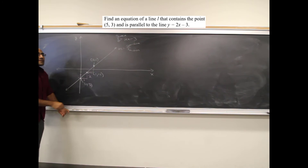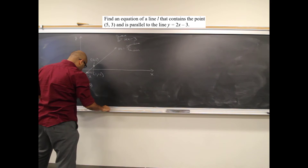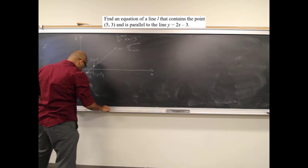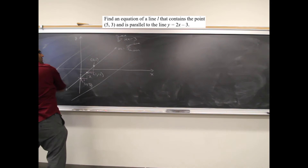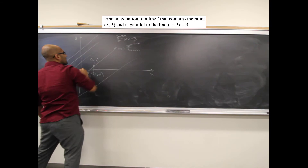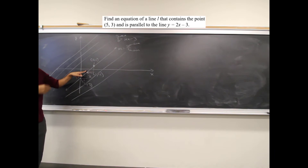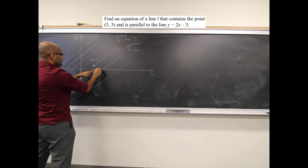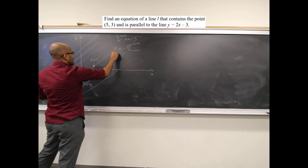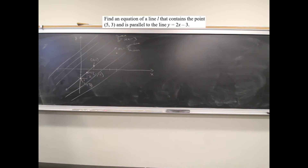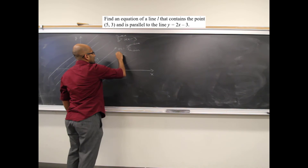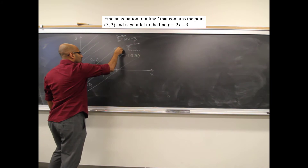They want me to find a new line parallel to this one, but there's an infinite number of parallel lines. In particular, they want the line that's also parallel and goes through the point (5, 3).